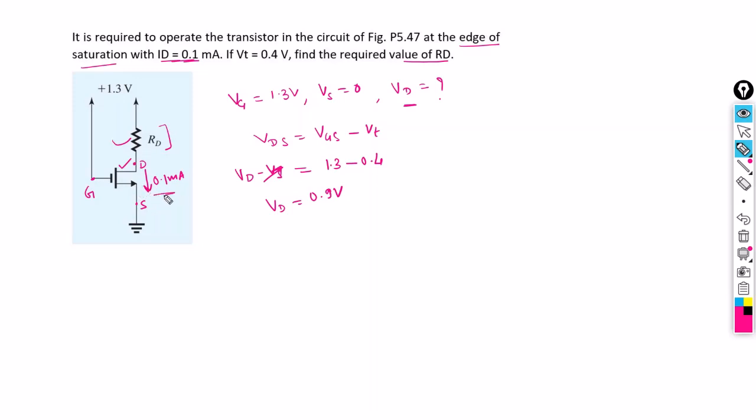Whatever current is flowing in the transistor will be the same current in drain resistance Rd. So we can write I Rd as 0.1 milliamperes. The current across this resistance is given as voltage drop across resistance divided by resistance Rd.